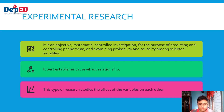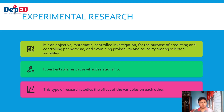Experimental research is an objective, systematic, controlled investigation for the purpose of predicting and controlling phenomena, and examining probability and causality among selected variables. It best establishes cause-and-effect relationships. For example, if you are a teacher doing research on an intervention, one class — the control group — receives no intervention, while the second group, the experimental group, receives the intervention. Then you observe the cause and effect of that particular intervention. It's not just for laboratory settings.